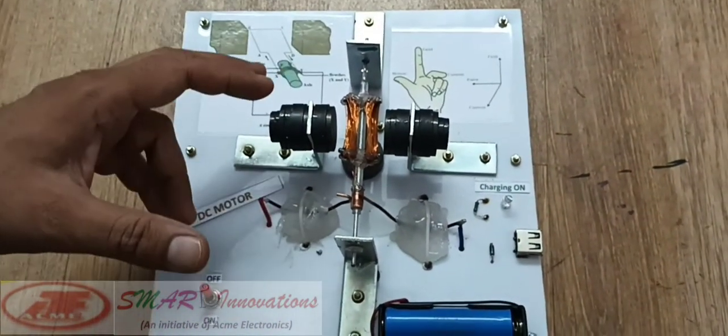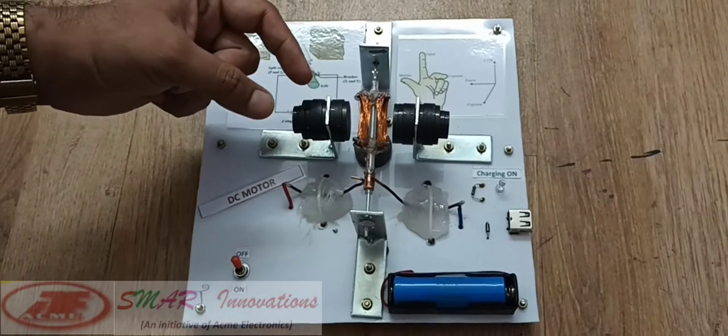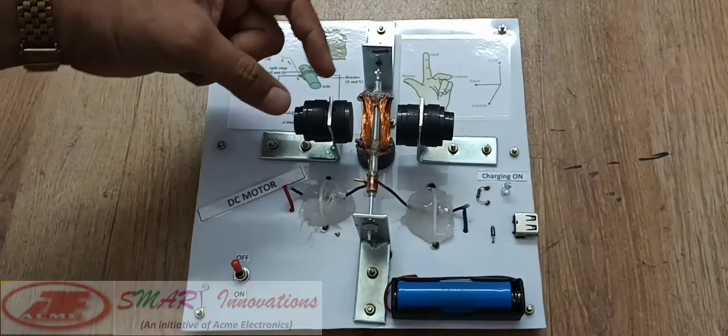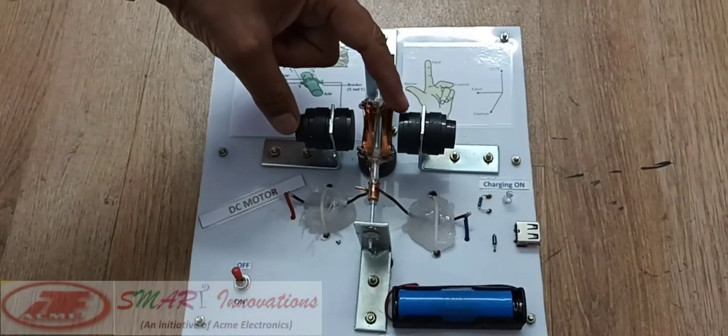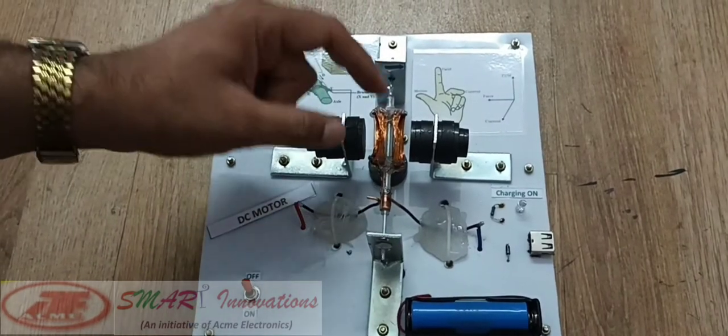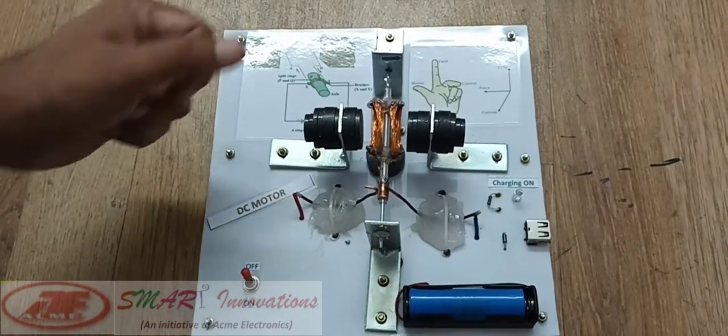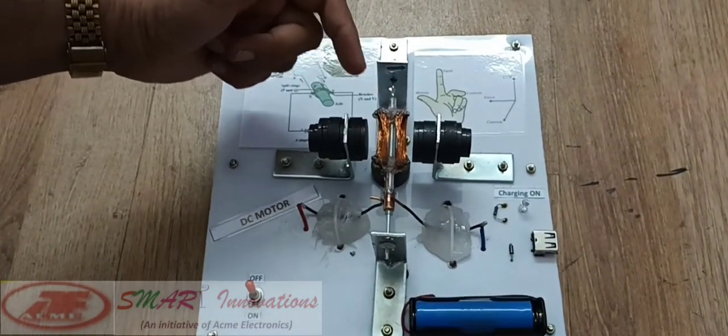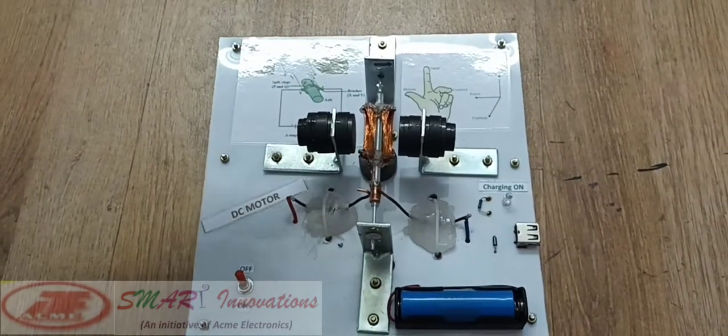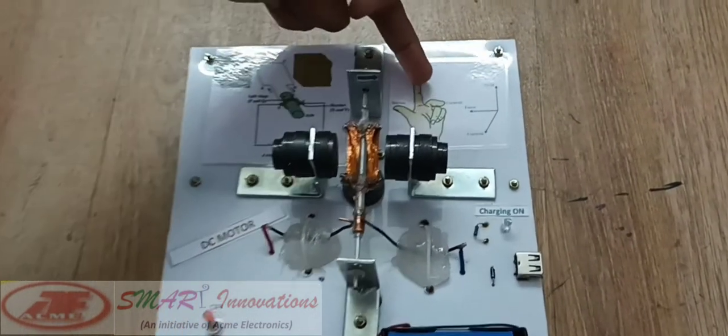The DC motor is based on the interaction of the magnetic fields between the permanent magnet and the coil magnetic field, and the direction of rotation depends on or is according to the Fleming's left hand rule.